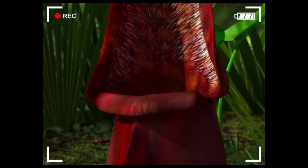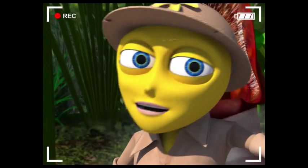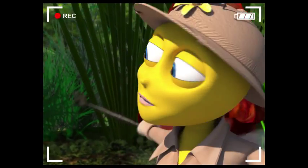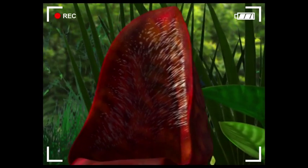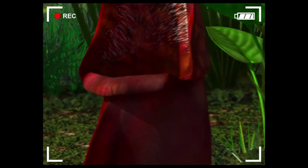You see, this plant is carnivorous, which means it eats meat. And in this case, it means bug meat. Now look, inside are little hairs. They point downward so when the bugs fall in, they can't climb out.